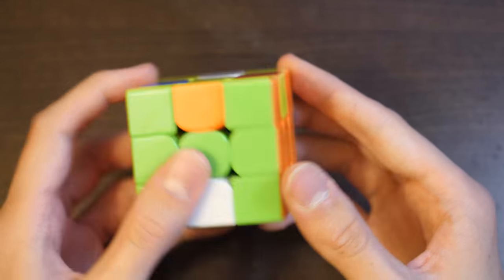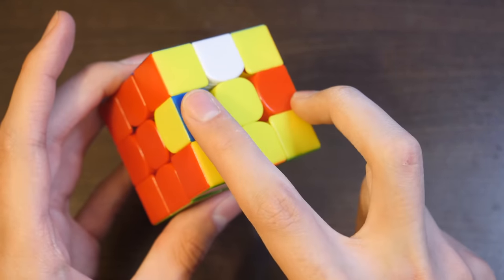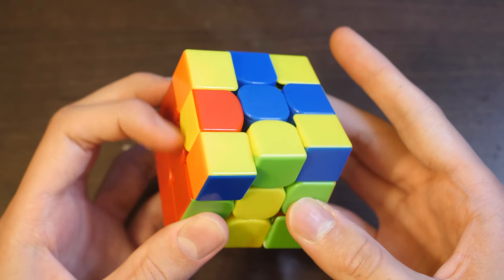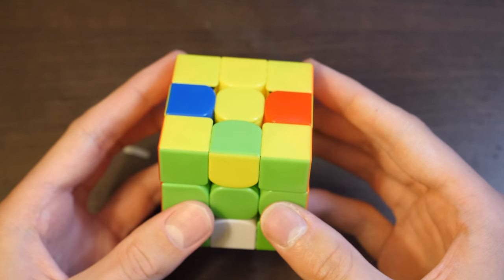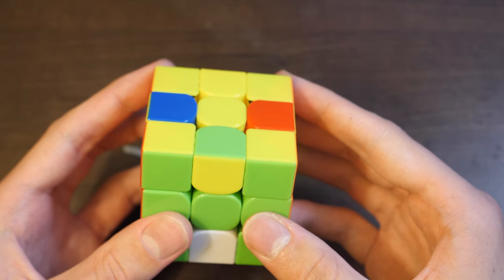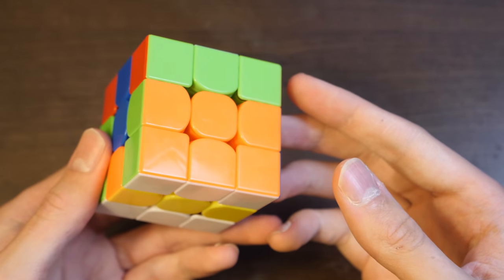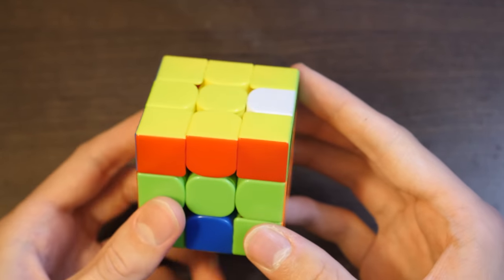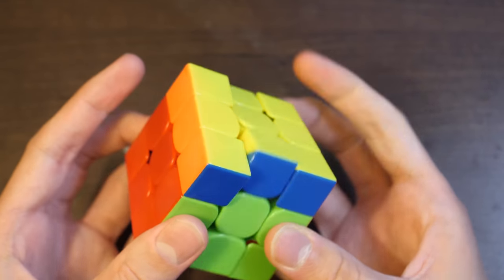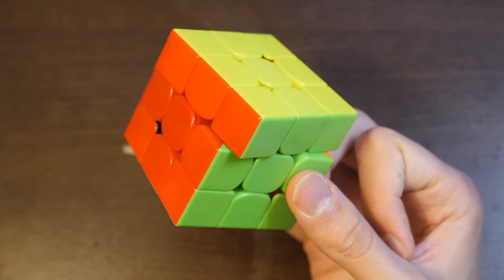And now he's going to do EO. He's got four bad edges, so he's going to set them up like this.